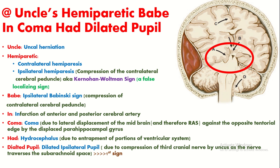Now let's discuss the mnemonic to remember the clinical features of uncal herniation. The mnemonic goes: 'Uncle's hemiparetic babe in coma had dilated pupil.' Where 'uncle' is for uncal herniation, 'hemiparetic' is for either contralateral or ipsilateral hemiparesis, 'baby' is for Babinski sign, 'in' is for infarction of anterior and posterior cerebral artery, 'coma' is for coma itself, 'had' is for hydrocephalus, and 'dilated pupil' is for dilated ipsilateral pupil, which is the first sign of uncal herniation.